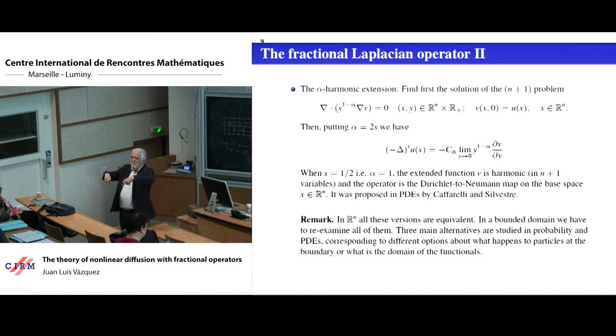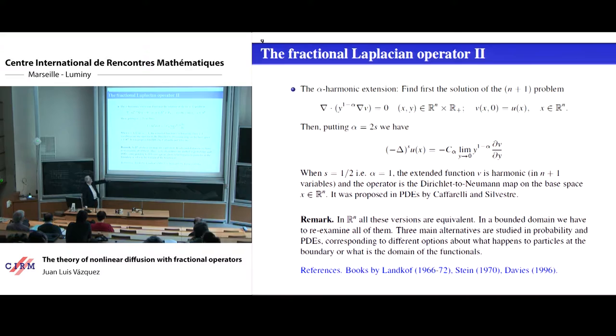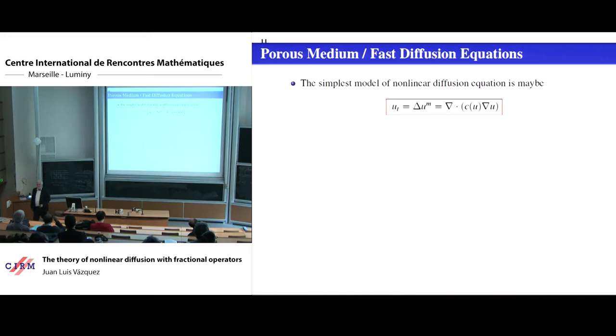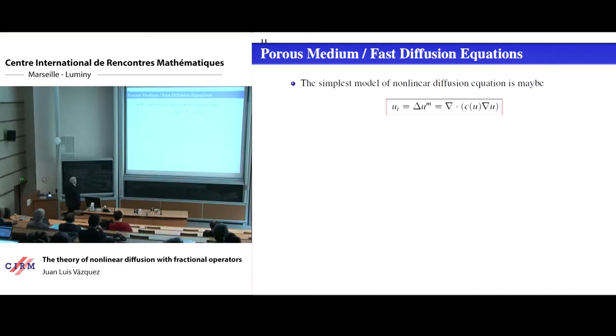Working in ℝⁿ, the basic books to learn this potential theory are Landkof, Stein, and Davies. Before presenting the real equation we were solving, let me tell you the equation we solved before — it was the Porous Medium equation. The Porous Medium equation is a very close sibling of the heat equation where the only difference is the exponent M, and usually we take M larger than 1. In the case of Professor Daskalopoulos, she took M less than 1 to do the Yamabe problem.